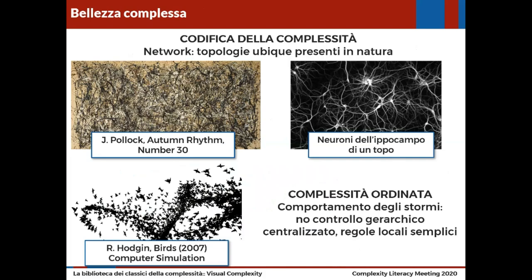Andiamo ancora avanti: possiamo parlare della bellezza della complessità, perché i network, le reti sono delle topologie ubique, presenti ovunque in natura. Sulla sinistra possiamo vedere un'opera di Jackson Pollock, sulla destra i neuroni dell'ippocampo di un topo, e troviamo comunque qualcosa di simile. In basso invece troviamo un esempio di stormo, che citava Alberto all'inizio del suo intervento. Possiamo parlare anche di complessità ordinata: in uno stormo non c'è un controllo gerarchico centralizzato, ma ci sono alcune regole locali semplici che permettono l'emergere della complessità.